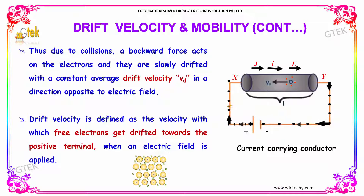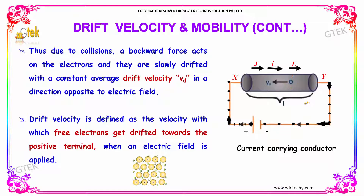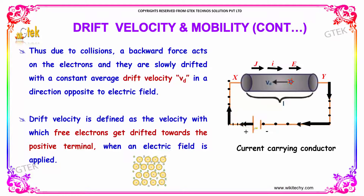They are slowly drifted with a constant average velocity Vd in a direction opposite to the electric field. Drift velocity is defined as the velocity with which free electrons get drifted towards the positive terminal when an electric field is applied.